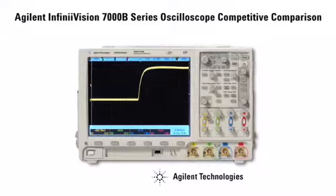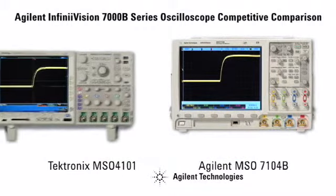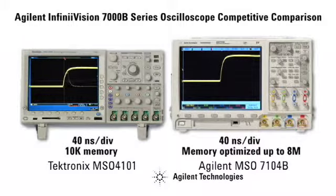As you can see, Agilent's InfiniVision MSO-7104B oscilloscope captures this glitch on average 2.5 times per second, allowing you to view elusive problems as they occur. The Tektronix MSO-4104B oscilloscope also captures the glitch regularly, as long as only the analog channels are displayed in factory default mode using only 10K points of memory.